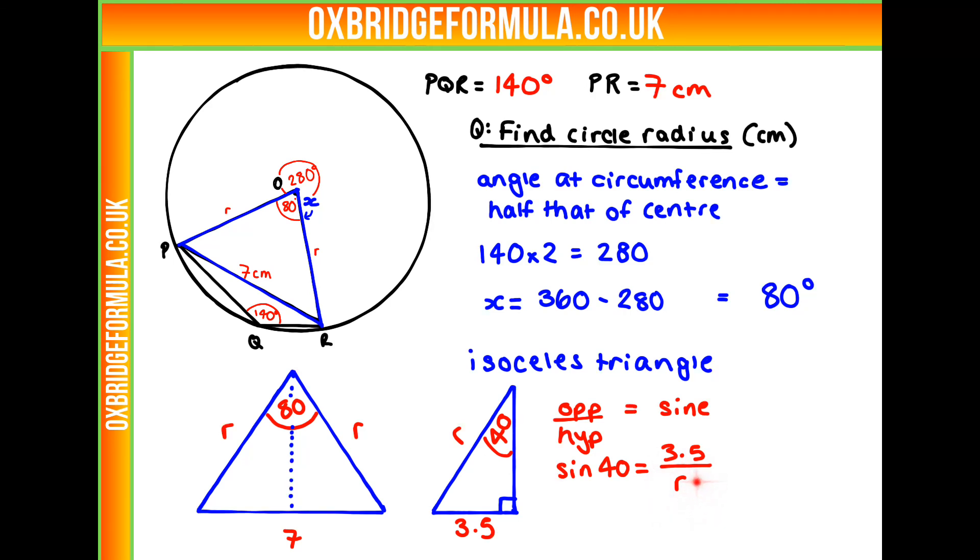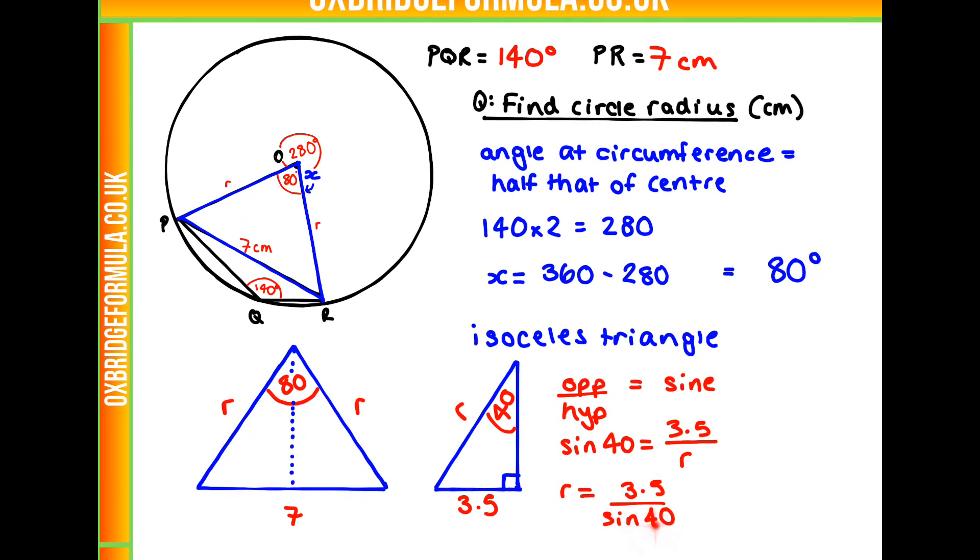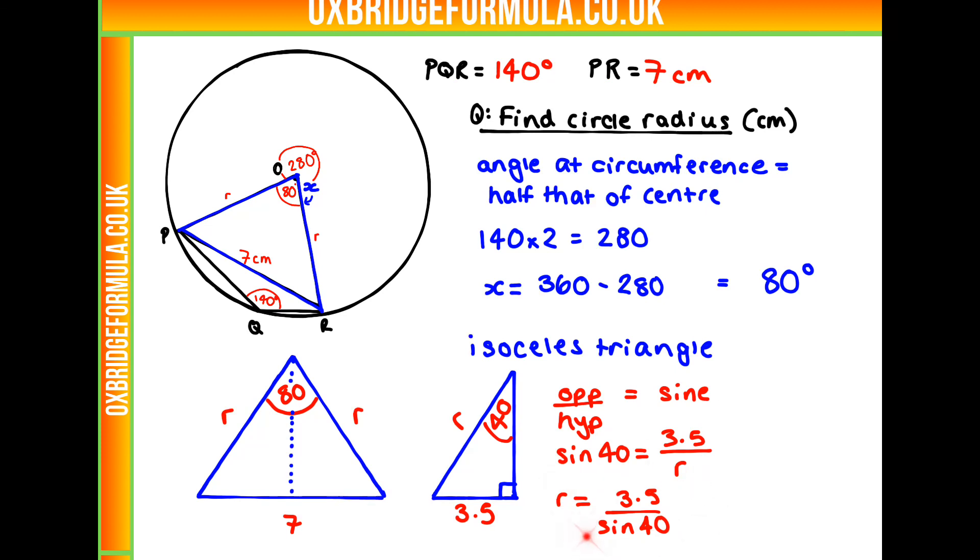So to find R, all we need to do is times both sides by R and divide both sides by sine of 40. So we get R equals 3.5 over sine of 40. That's our final answer there, and our answer overall is E.